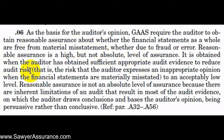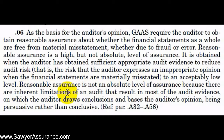AUC sections 300 and 330 provide more details about designing audit procedures to reduce detection risk. All of this discussion has been with the purpose of finding reasonable assurance that the financial statements as a whole are free from material misstatement. As discussed, we can't find absolute assurance because there are inherent limitations of the audit, which result in our evidence and conclusions being persuasive rather than conclusive. So what are some of those inherent limitations?